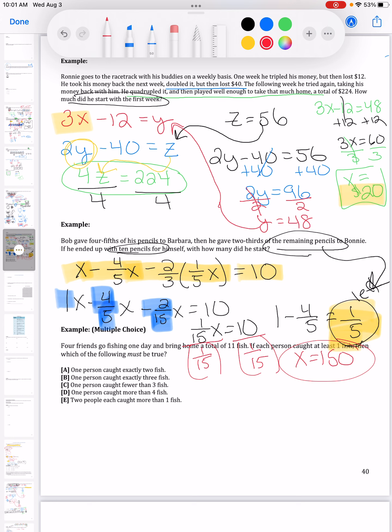Couple different ways you can do it. I'm going to divide by one over fifteen, make sure to put that in parentheses, and that's going to give me X equals a hundred and fifty pencils.